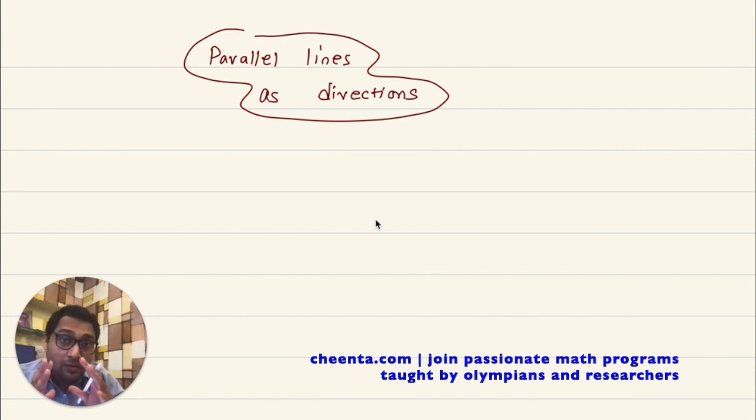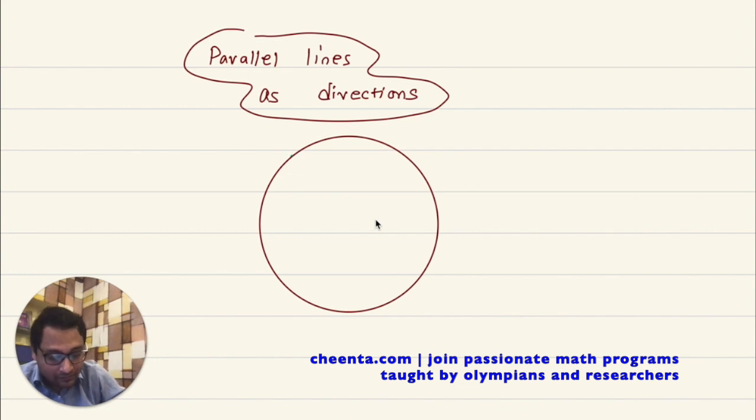So let's look at a problem right away. Suppose we have a circle like this. Let me draw a circle and I'll draw a quadrilateral, a cyclic quadrilateral A, B, C, and D.